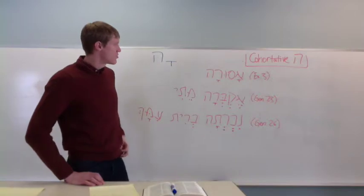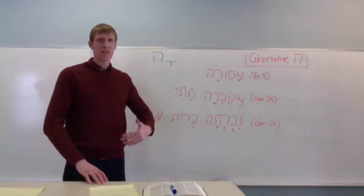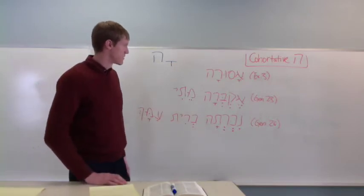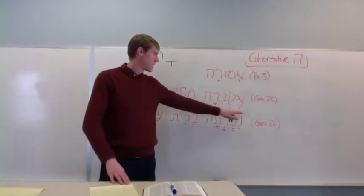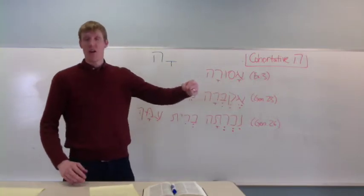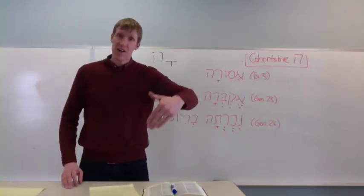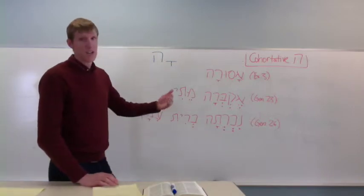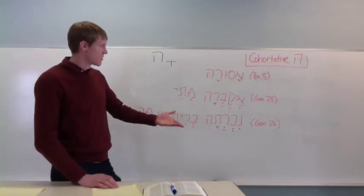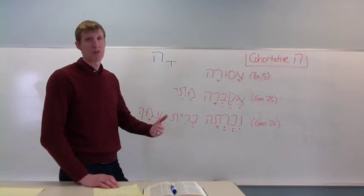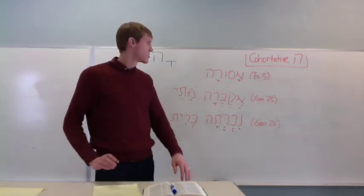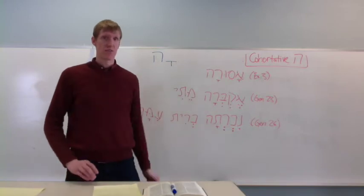Here are two more examples just so you can see the form and imagine how it might be translated. So, here, from Genesis 23, this is, interestingly, right after the story of the binding of Isaac, when Sarah dies at the beginning of chapter 23, and Abraham goes to bury her.